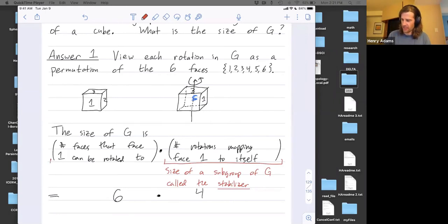This right here is going to be called the size of the orbit of face 1. So face 1 can get mapped in different places. The orbit of face 1 is all the different places that face could be mapped. And so we're going to be counting the size of that orbit.